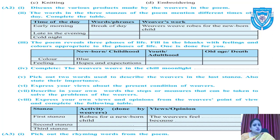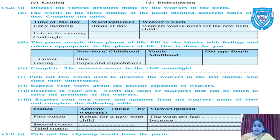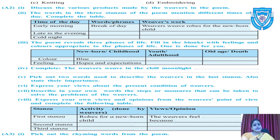Question number five: pick out two words used to describe the weavers in the last stanza and state their importance. The words used in the last stanza are 'solemn' and 'still.' Solemn means dignified — a state of dignity — and still means there is no movement at all, a state of complete silence. You have to write in your own words why these words are important in the last stanza.